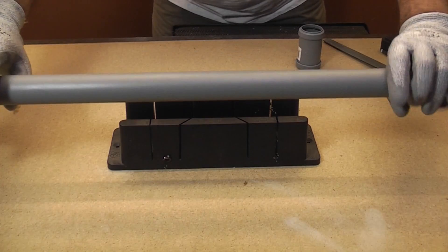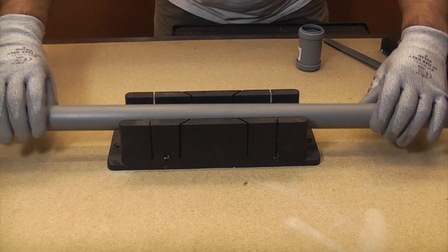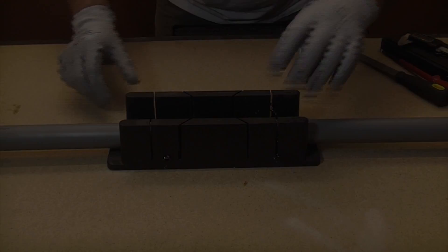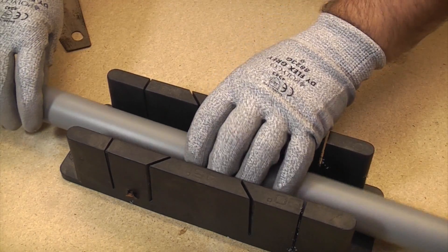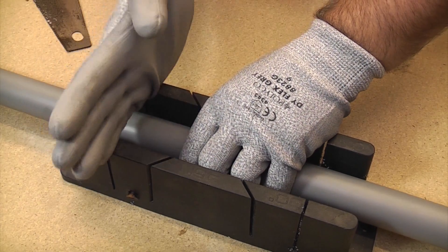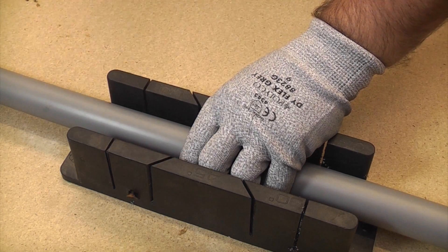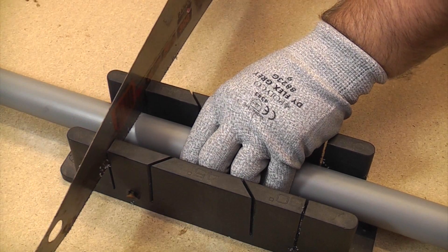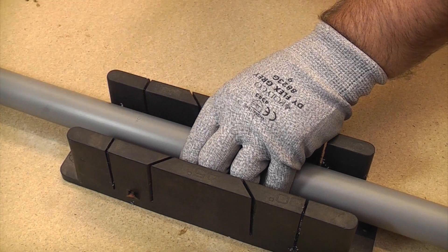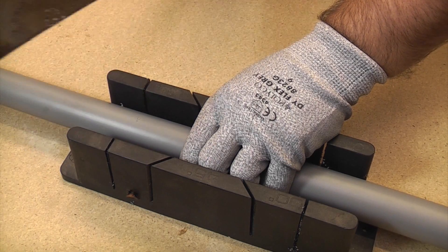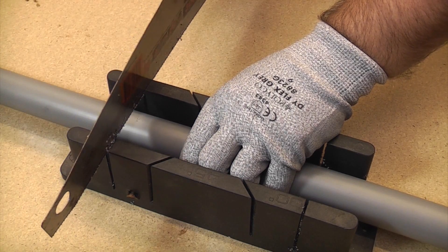So whenever you cut a piece of pipe like this you need to get it square, so we're going to use a mitre box. What we do with the mitre box is put the pipe in where you want it cut and then cut through one of the straight lines on the mitre box. It doesn't really matter which kind of saw you use because any kind of saw will normally cut pipe like this.